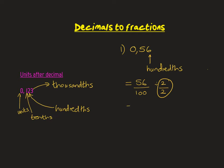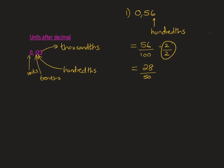56 divided by two is 28, and 100 divided by two is 50. We can divide by two again, giving us 14 over 25. Now check: can anything go into both 14 and 25? No, because the only factors of 25 are 1, 25, and 5 — and 14 doesn't have those factors. So that is your final answer.